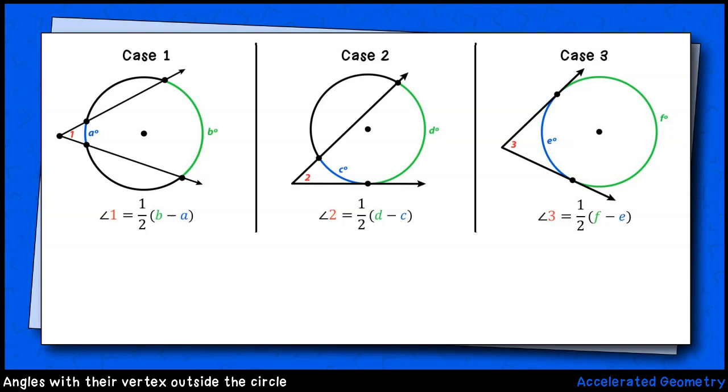Here are a few different scenarios to show the various ways this could work out. In case one, we have two secants, just like the example we looked at. In case two, we have a secant and a tangent line, and in case three, we have two tangents.